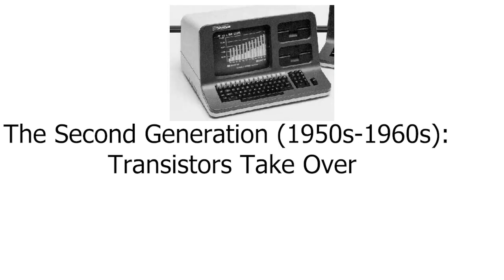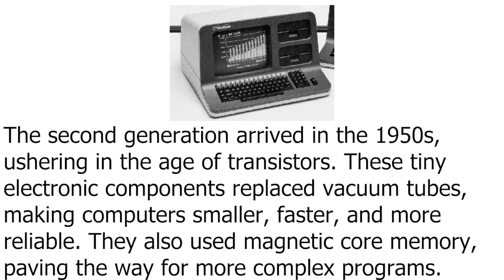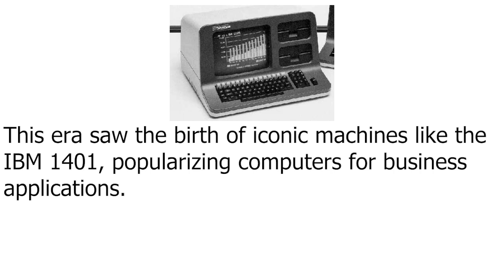The second generation, 1950 to 1960: transistors take over. The second generation arrived in the 1950s, ushering in the age of transistors. These tiny electronic components replaced vacuum tubes, making computers smaller, faster, and more reliable. They also used magnetic core memory, paving the way for more complex programs. This era saw the birth of iconic machines like the IBM 1401, popularizing computers for business applications.